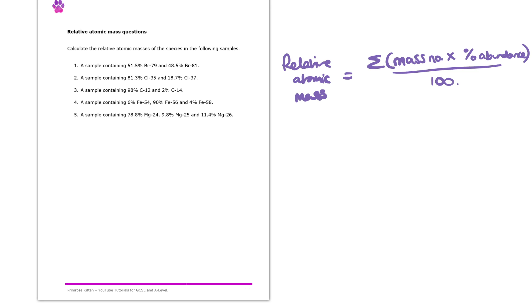Okay, let's have a look now at question two. So here, the same idea occurs. We've got 81.3% of chlorine-35 and 18.7% of chlorine-37, where in this case, the 35 is the mass of that first isotope of chlorine and 37 is the mass of that second isotope.